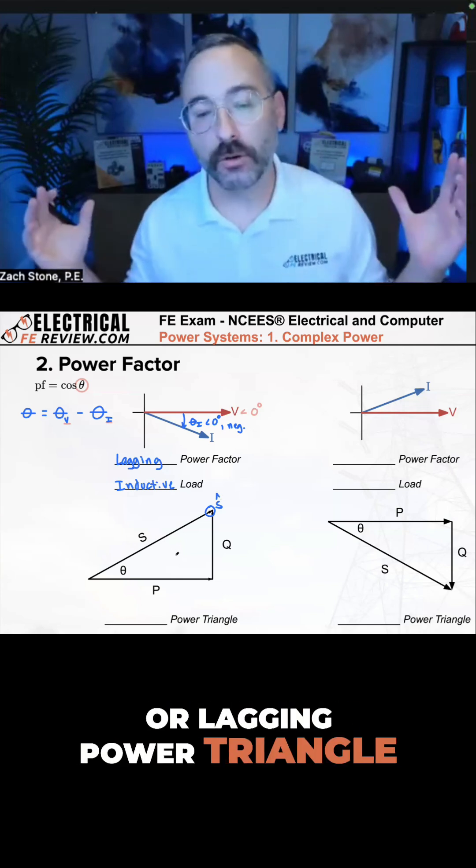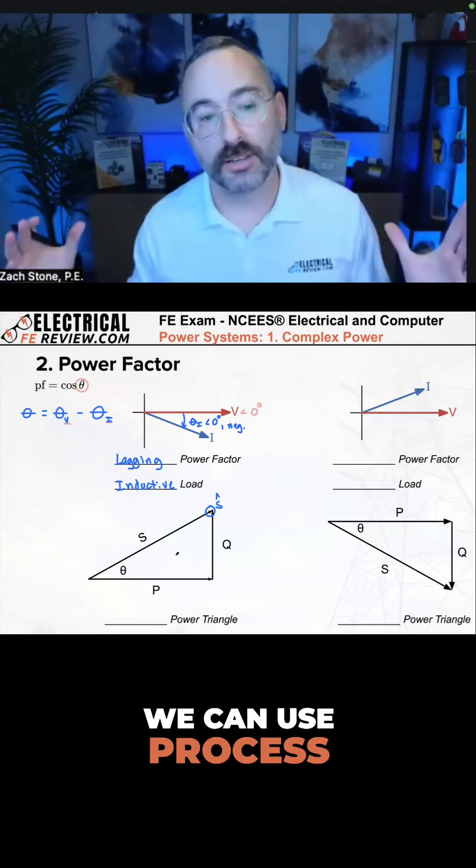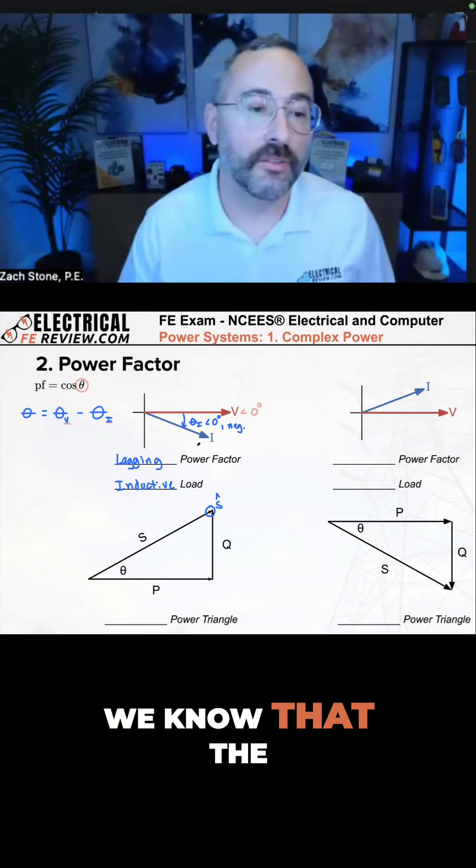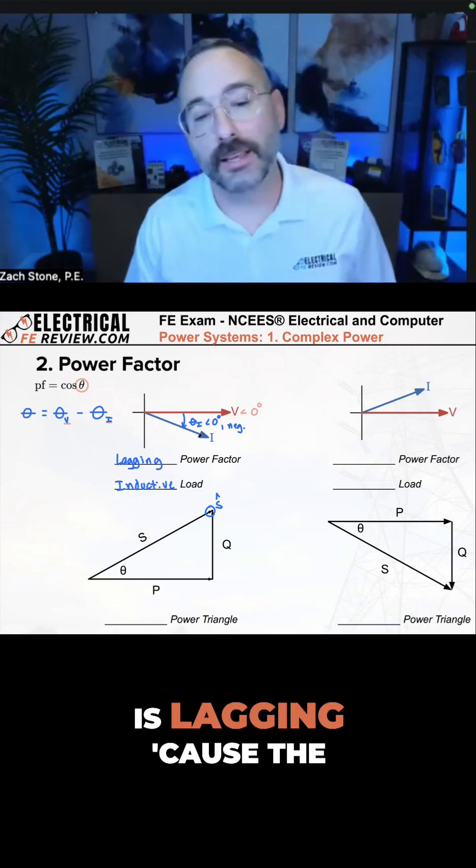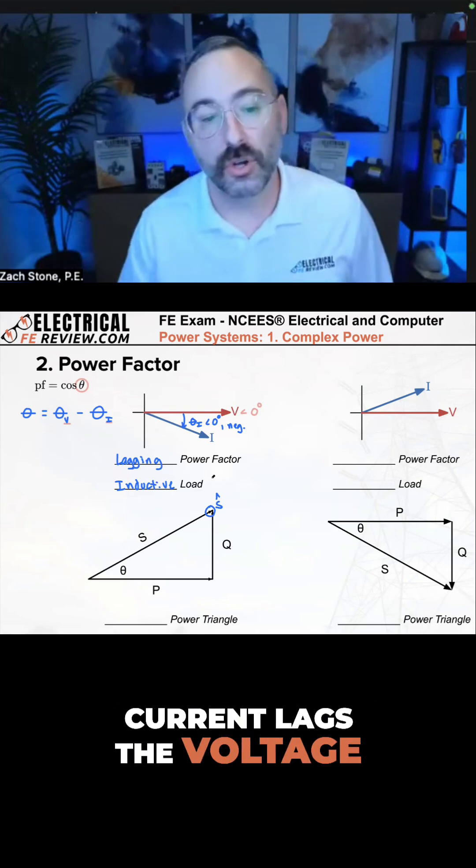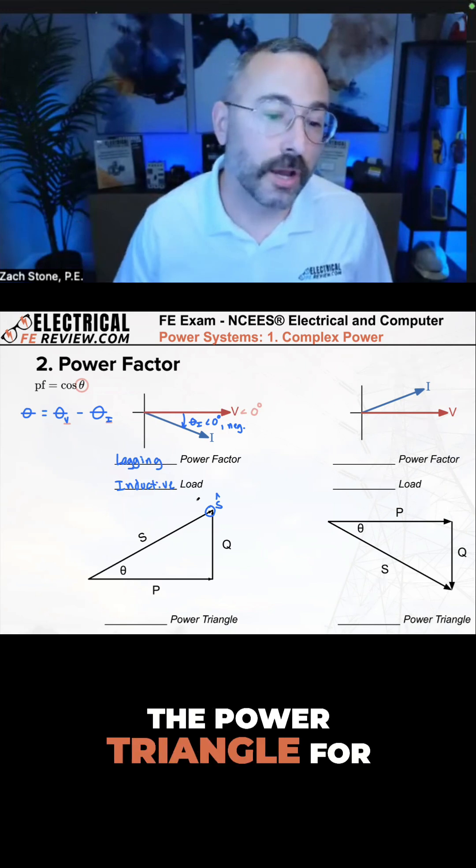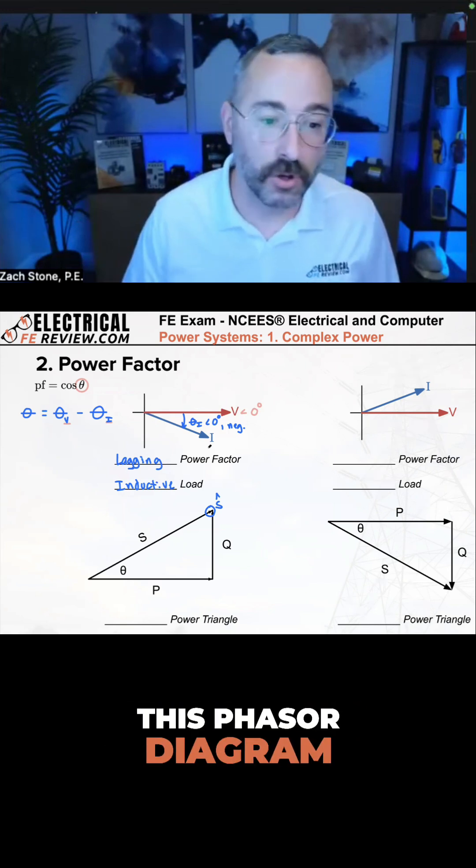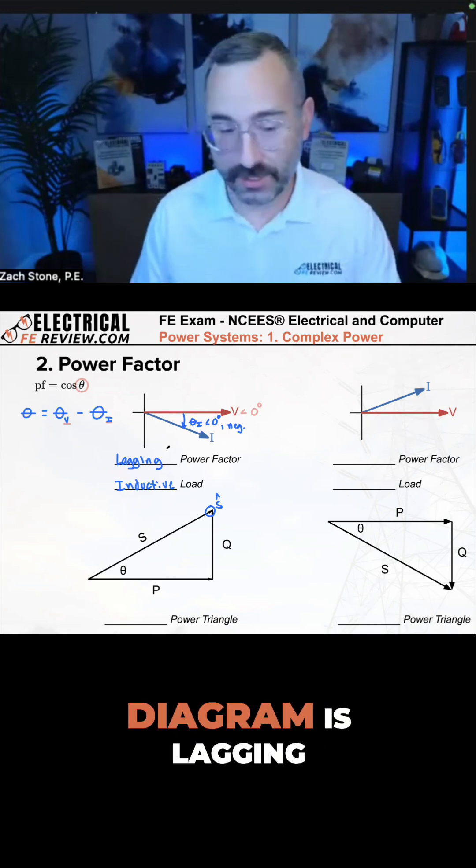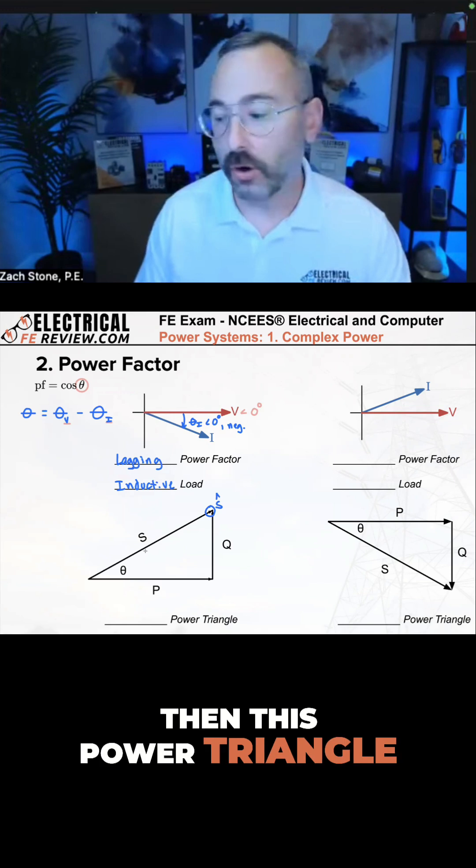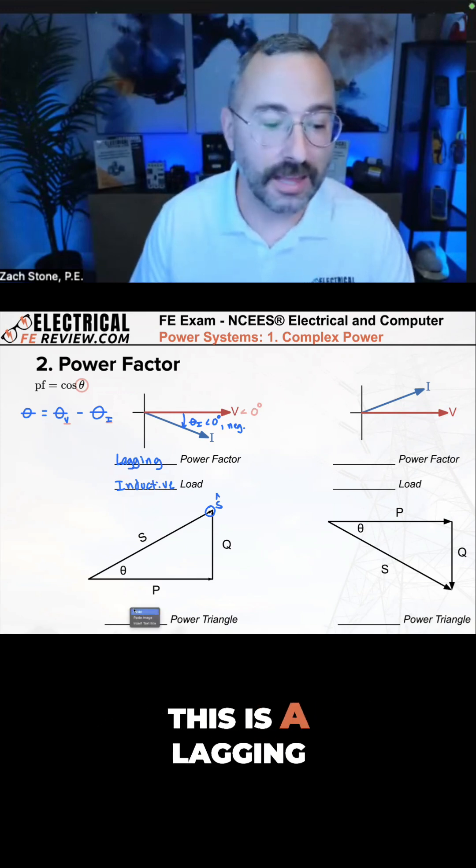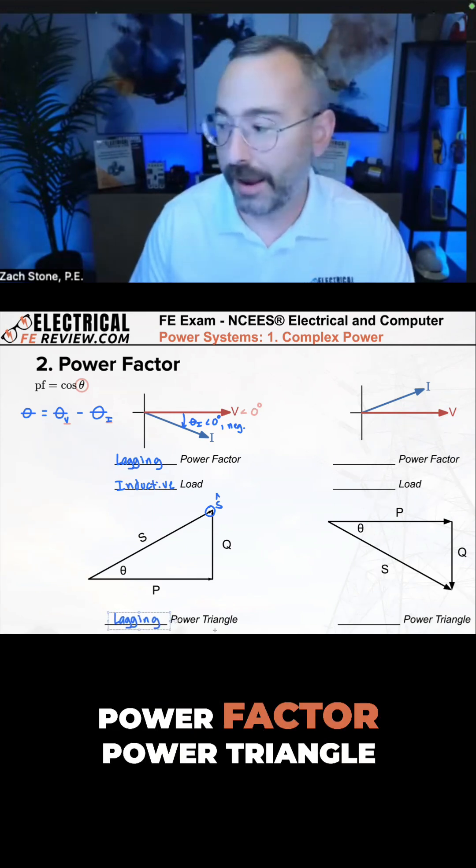Is this a leading or lagging power triangle? And if you're not sure, we can use process of elimination. We know that the phasor diagram on top is lagging because the current lags the voltage. We know this is the power triangle for this phasor diagram. So if this phasor diagram is lagging, then this power triangle also has to be what? This is a lagging power factor power triangle.